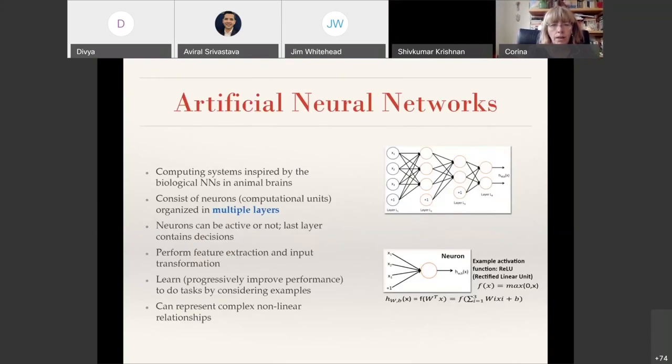As Jim already talked about many aspects of artificial intelligence, our research focuses particularly on artificial neural networks, which are computing systems inspired by biological neural networks in animal brains. They consist of many neurons organized in layers. Particularly for this talk, it is important to know that they can be active or not, and that the last layer typically contains decisions. Our talk will focus particularly on classification networks.